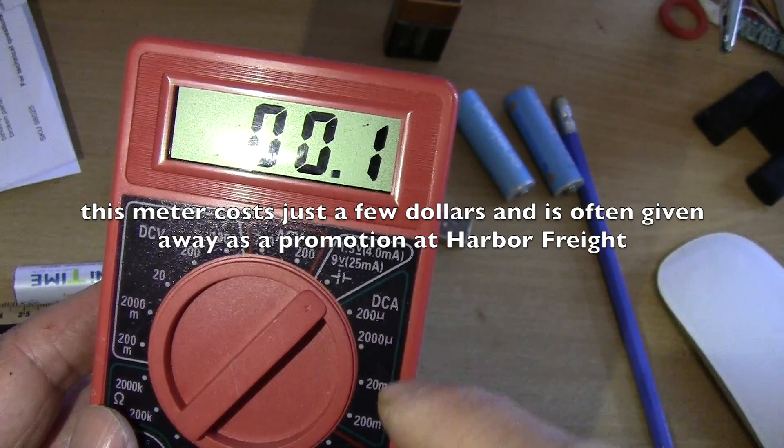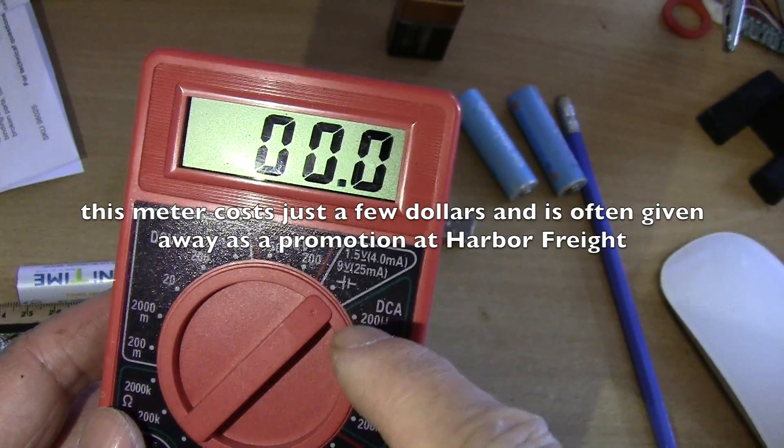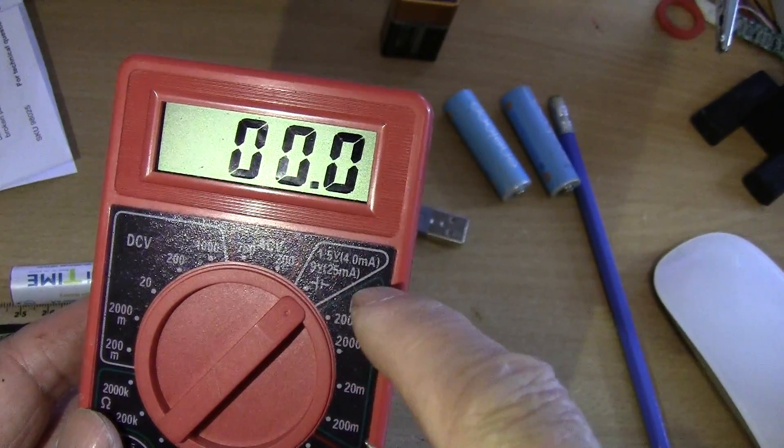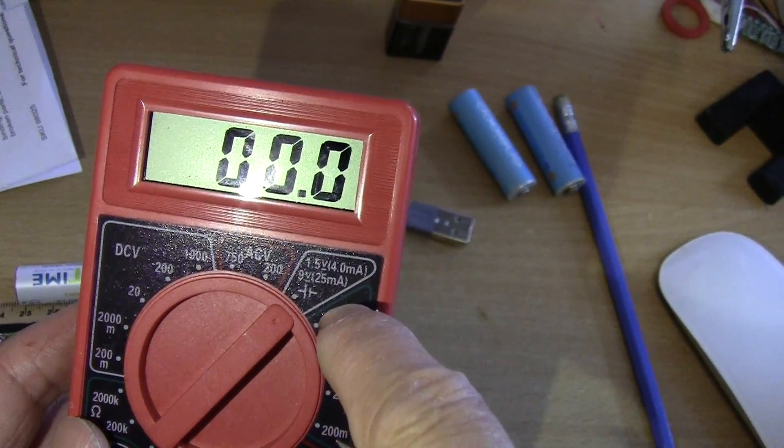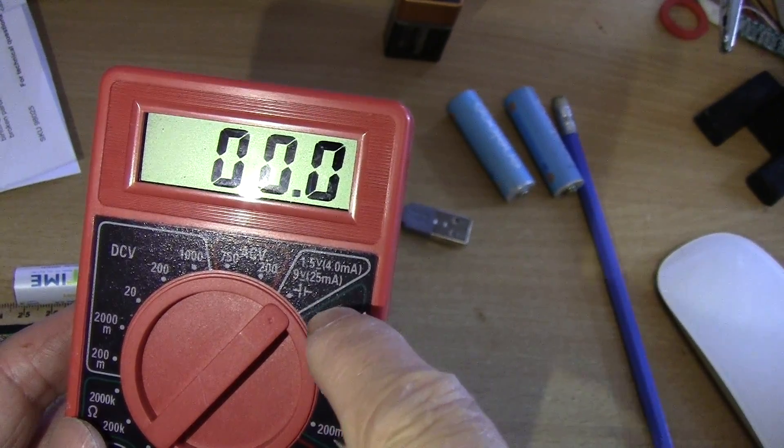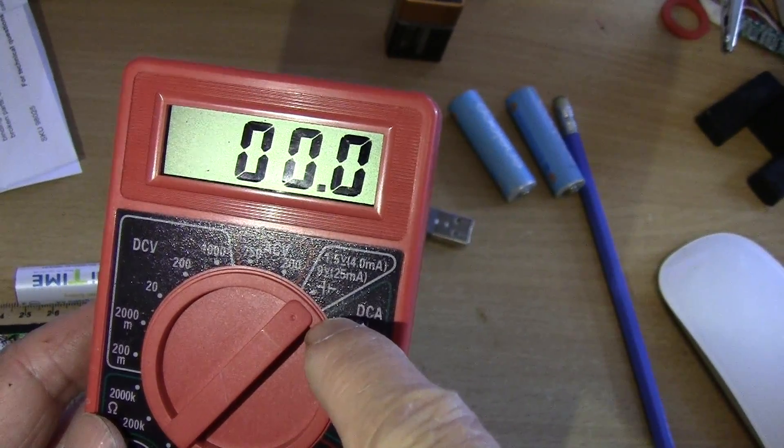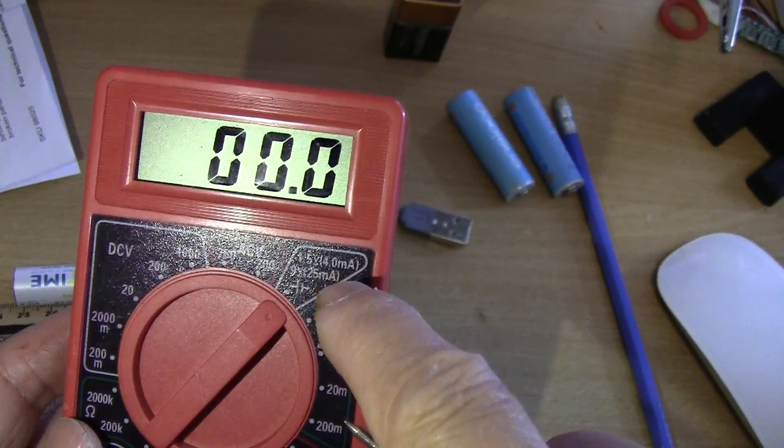This is the inexpensive Harbor Freight Multimeter and there's a function I didn't know existed because it was kind of small. You can see here 1.5 volt and 9 volt - there's a little sign there that's actually for checking your battery under load.